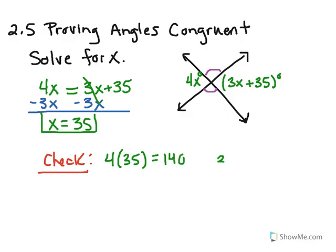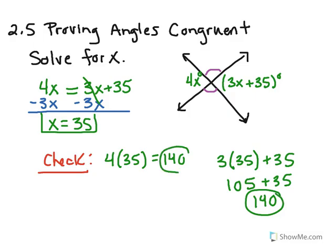So let's see if the other part comes out to be the same thing. So 3 times x, which is 35, and then plus 35. So 3 times 35 is going to be 105. And I'm going to add 35 to that, which gives me 140. So these two are the same exact measure, so I know that I did that right.